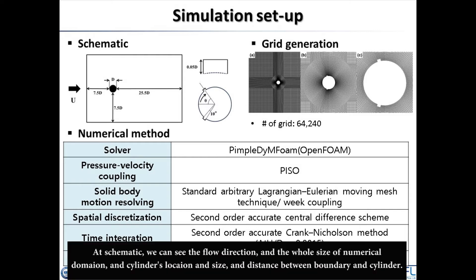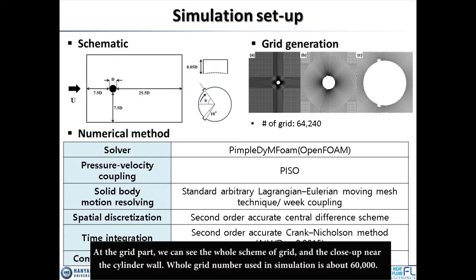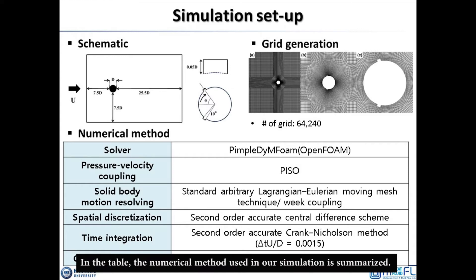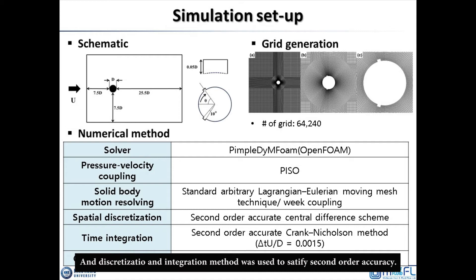This is our simulation setup. In the schematic, we can see the flow direction and the overall size of the numerical domain, the cylinder's location and size, and the distance between the boundary and the cylinder. We can also see the bump location, size, and shape. Regarding the grid, we can see the overall grid scheme and a close-up near the cylinder wall. The total grid number used in the simulation is about 60,000. The numerical methods used are summarized in the table; briefly, we used the PIMPLE solver in OpenFOAM software to simulate fluid-structure interaction, and discretization integration methods were used to ensure second-order accuracy.